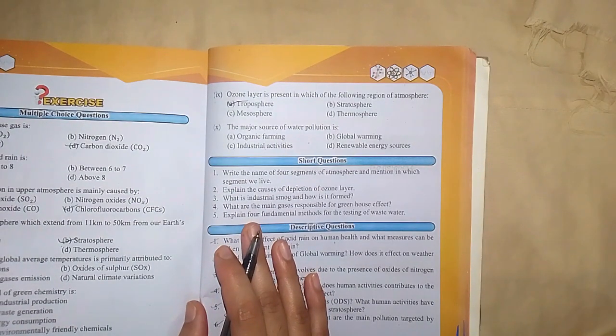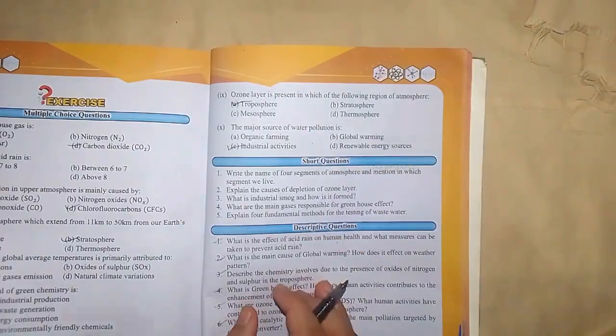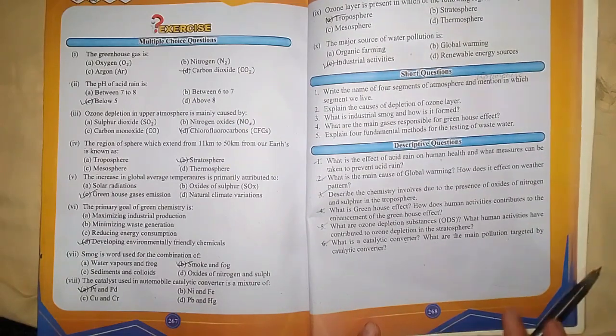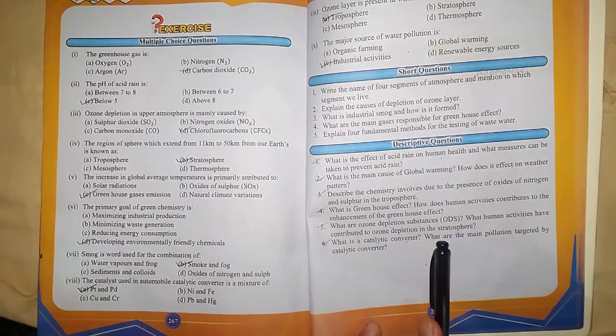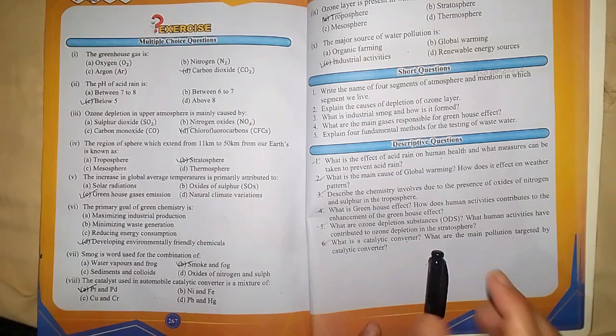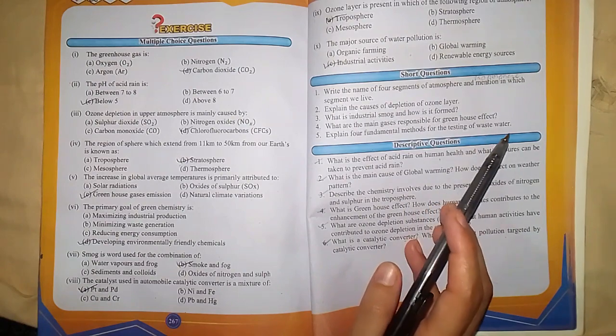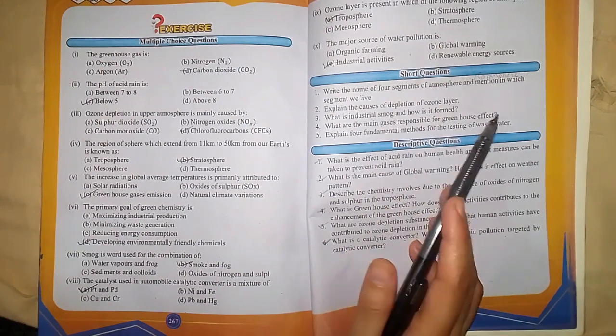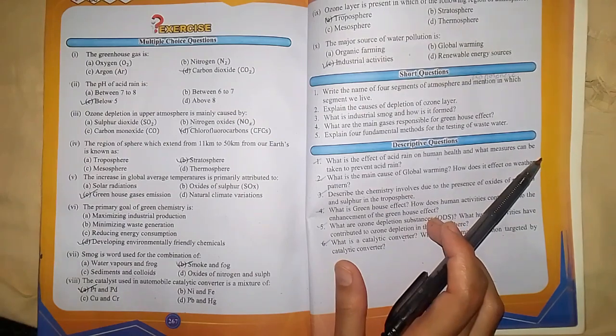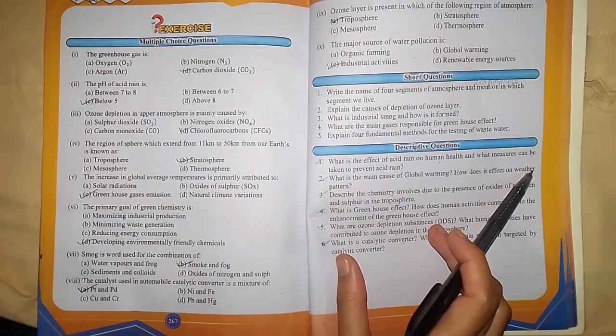MCQ number 10: The major source of water pollution is industrial activities. The correct option is C. You can cover these MCQs and short questions when you read the book. You have to memorize topics like ozone layer depletion, acid rain effects, air pollution, water pollution, gases responsible for greenhouse effect and global warming, and methods for testing waste water. Best of luck to all of you. Inshallah in the next video we will continue. All the best to all of you.